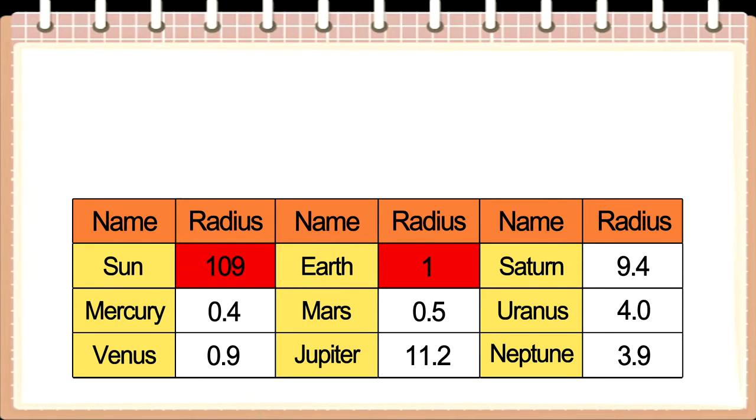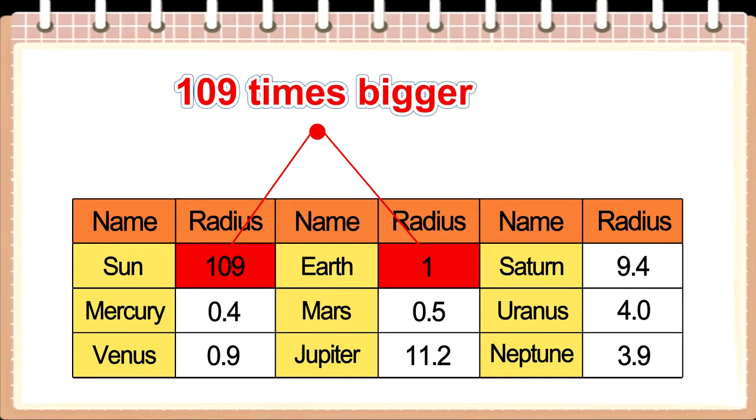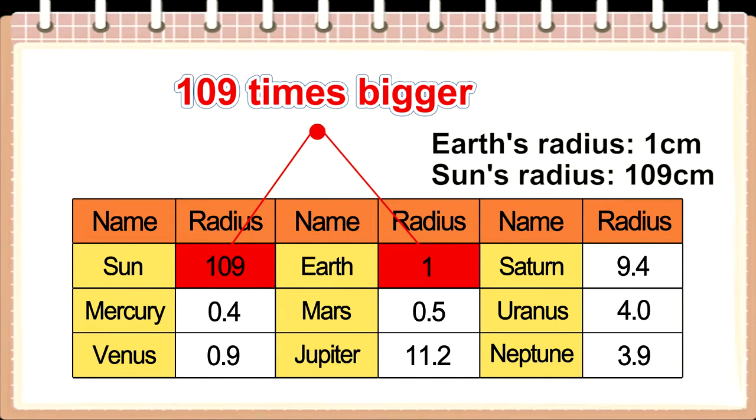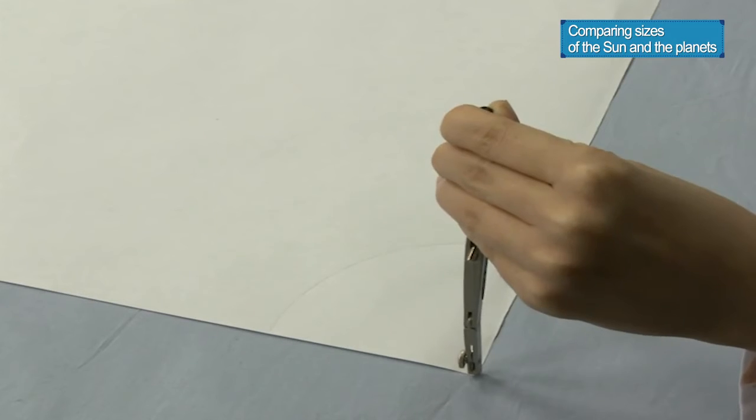Since the Sun is 109 times bigger than the Earth, if we draw the Earth with a radius of 1 centimeter, the Sun's radius should be 109 centimeters. This is more than 1 meter long. The Sun won't fit onto a sheet of paper.